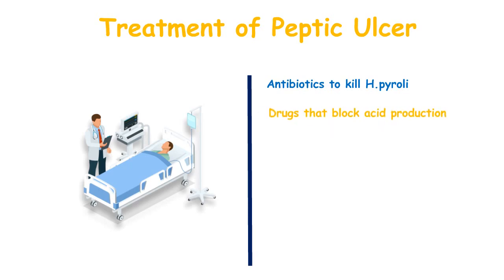Another treatment option is drugs that block acid production, since excessive acid production leads to Peptic Ulcer and must be blocked. The third option is drugs that reduce acid production. Since acid production is a continuous process, certain medications are used to reduce it.